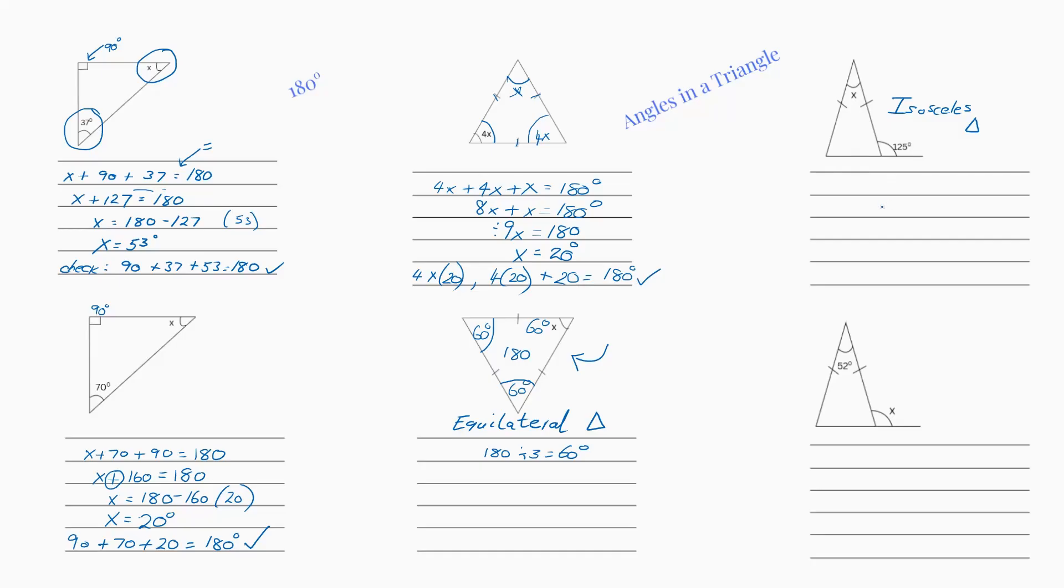Now this one is an isosceles triangle. So what this is telling you, these two lines are two sides of the same length. And we have two angles that are going to be the same. Slightly different, slightly more tricky, but doable.